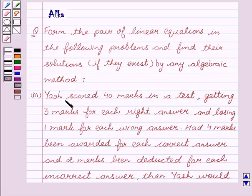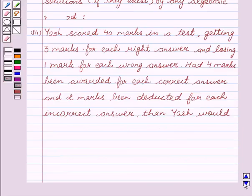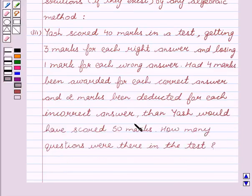Our problem is: Yash scored 40 marks in a test, getting 3 marks for each right answer and losing 1 mark for each wrong answer. Had 4 marks been awarded for each correct answer and 2 marks been deducted for each incorrect answer, then Yash would have scored 50 marks. How many questions were there in the test?